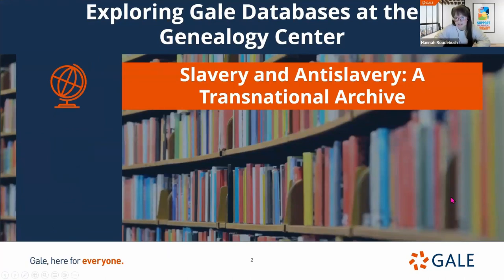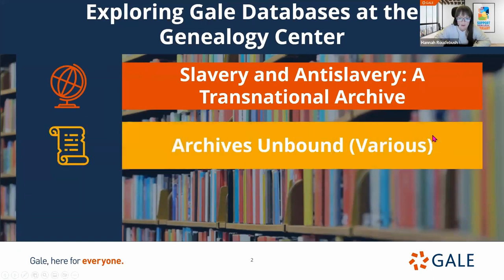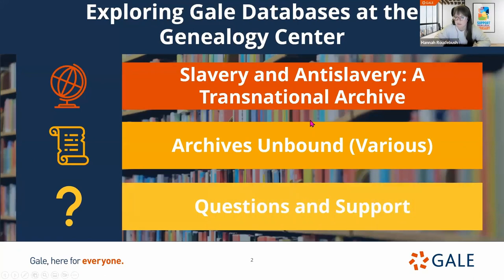We're going to look at a few different things today. We're going to start with one of your archive resources called Slavery and Anti-Slavery, a Transnational Archive — a really big collection containing resources divided into four different parts. Then we'll dive into a few of your Archives Unbound collections. You actually have three different Archives Unbound collections available to you, and we'll poke around in each of them, time permitting. At the end, we'll have some time for questions and to review some support site information.